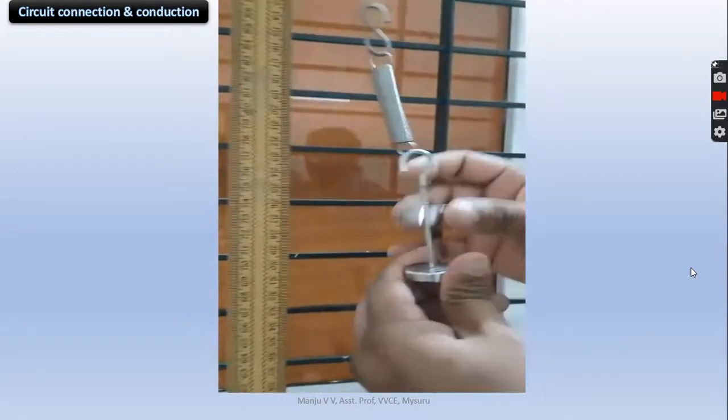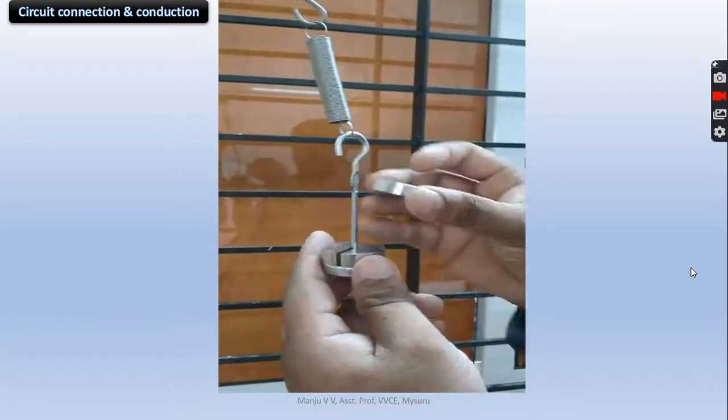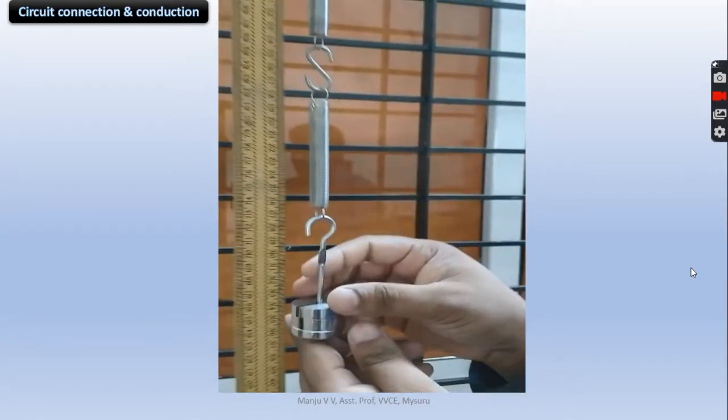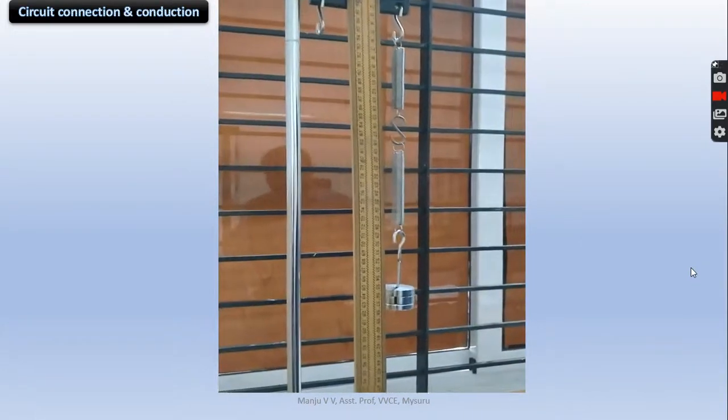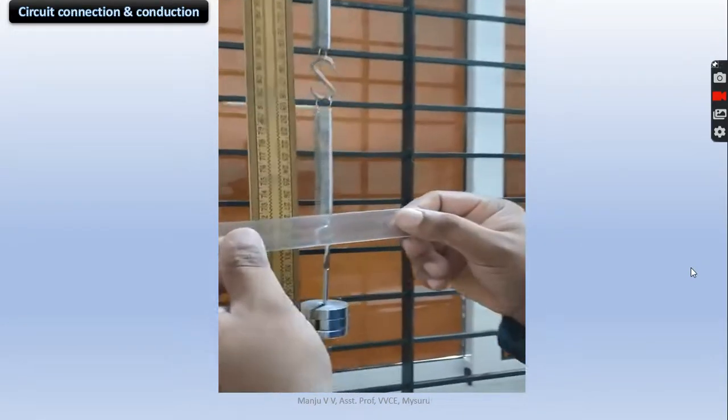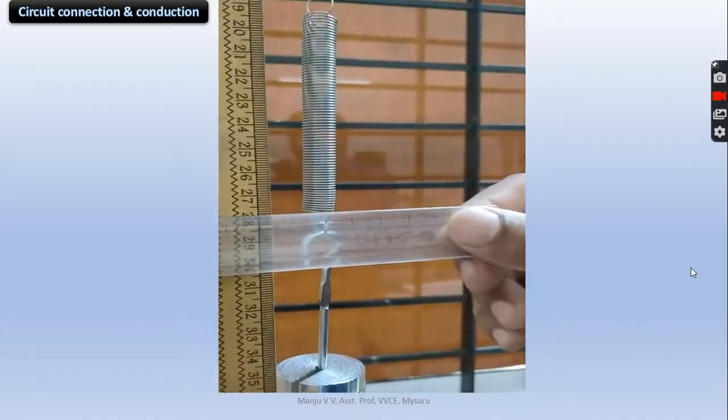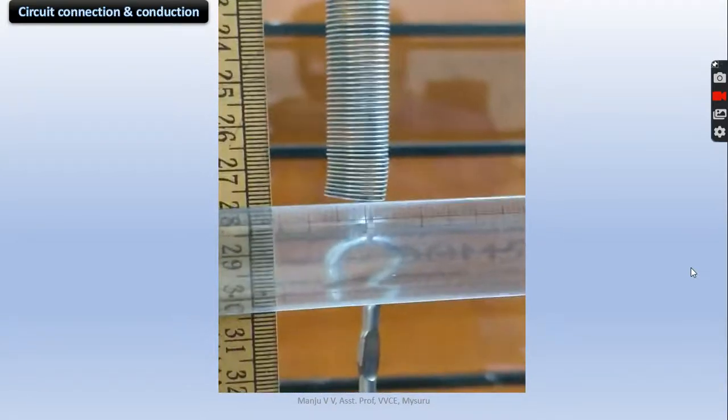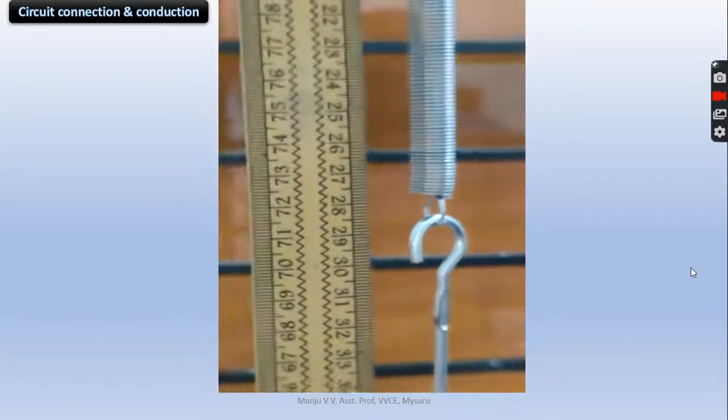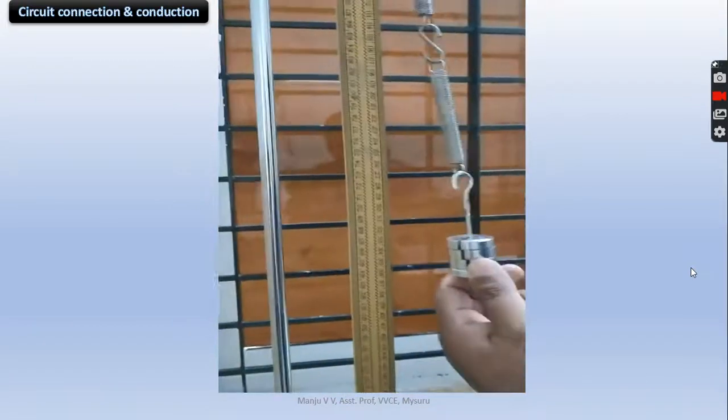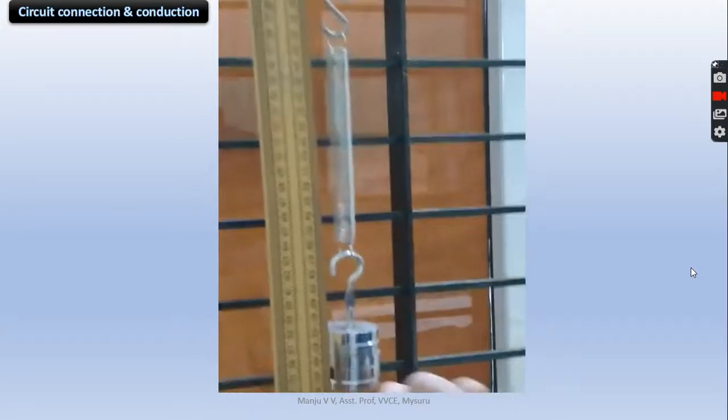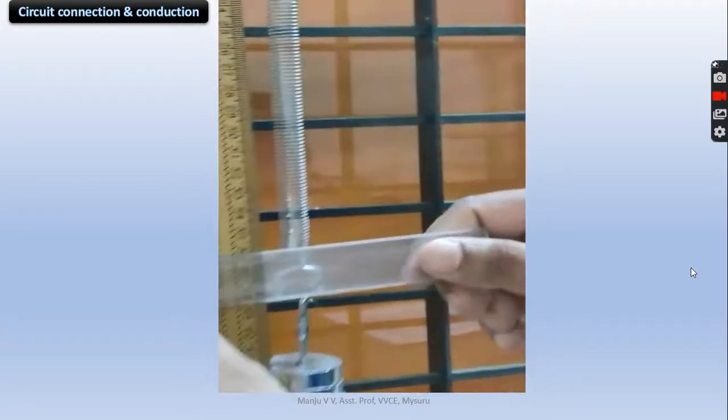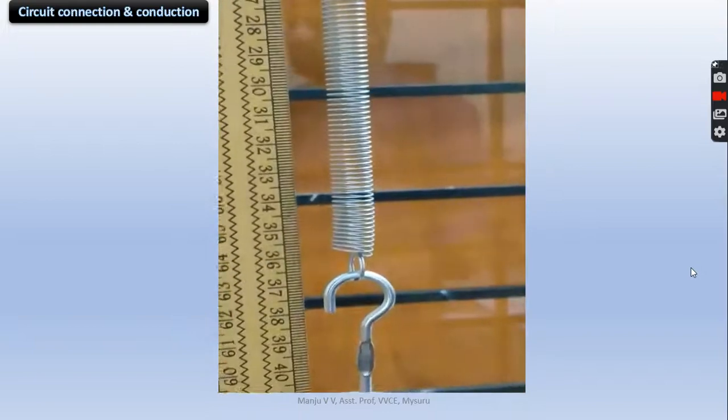Now I will add 50 plus 50, total 100 grams of weight to the series combination springs. Now measure the extension produced by it. It is approximately 28 cm. Now add two more 50s. Now it is total 200 grams of weight. Now measure the extension - it is 36 cm in my case.